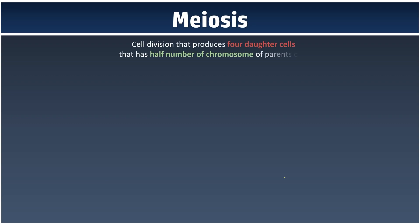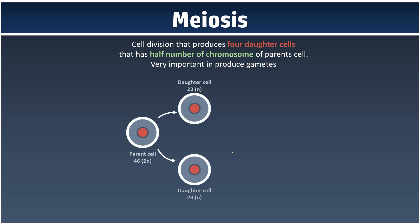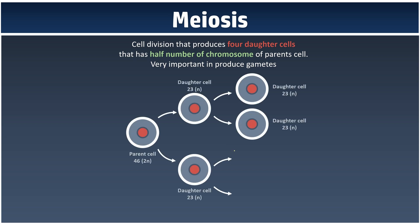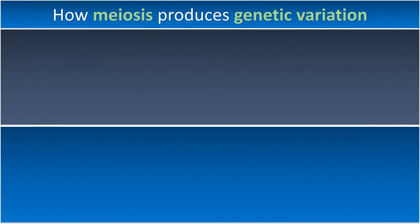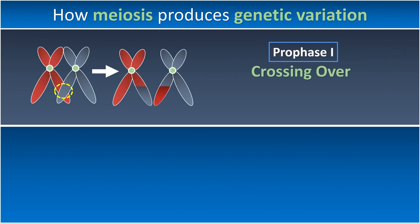Meiosis is a very important process to produce gametes, eventually producing gametes that contain only half the number of chromosomes, known as the haploid cell. But how does meiosis produce genetic variations? This is thanks to crossing over, which happens in prophase 1, where there is an exchange of genetic material between two non-sister chromatids.